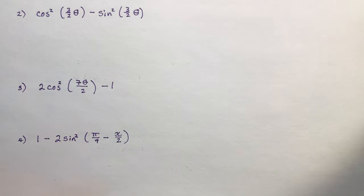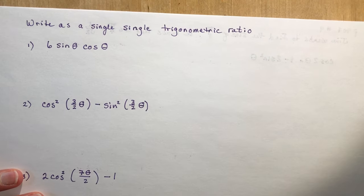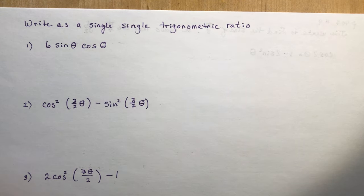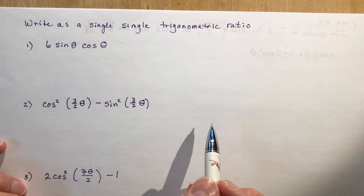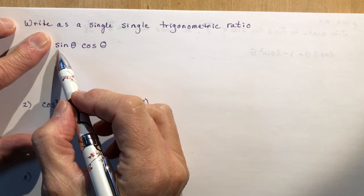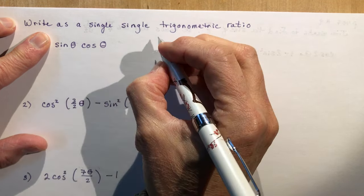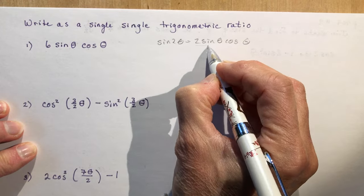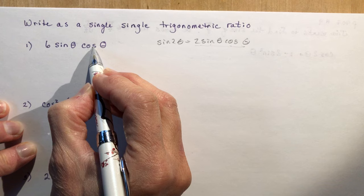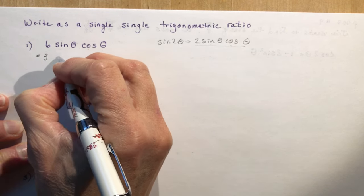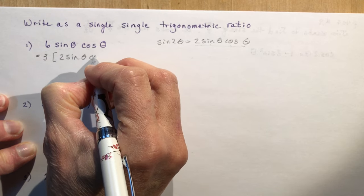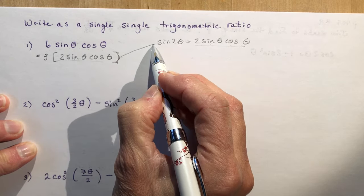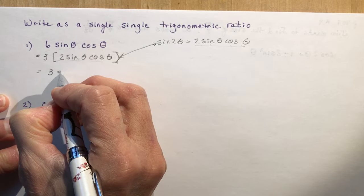The trickier questions ask you to write as a single trigonometric ratio. Given 6 sin θ cos θ — the pattern sin 2θ = 2 sin θ cos θ is there, but I have 6 instead of 2. If I factor out a 3, I'm left with 2 sin θ cos θ, which I replace with sin 2θ. So 6 sin θ cos θ = 3 sin 2θ.